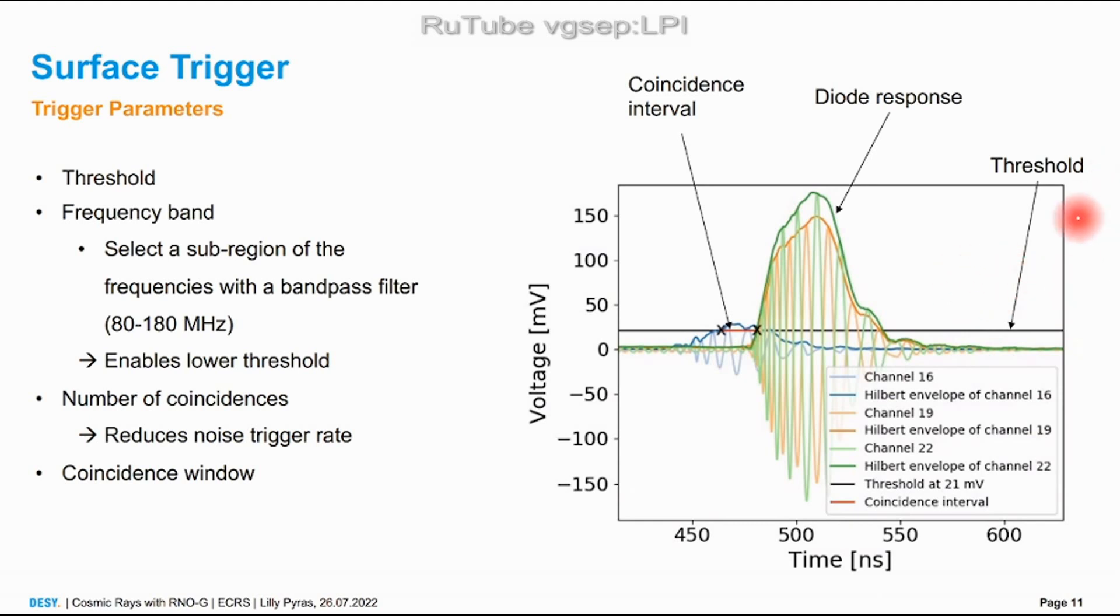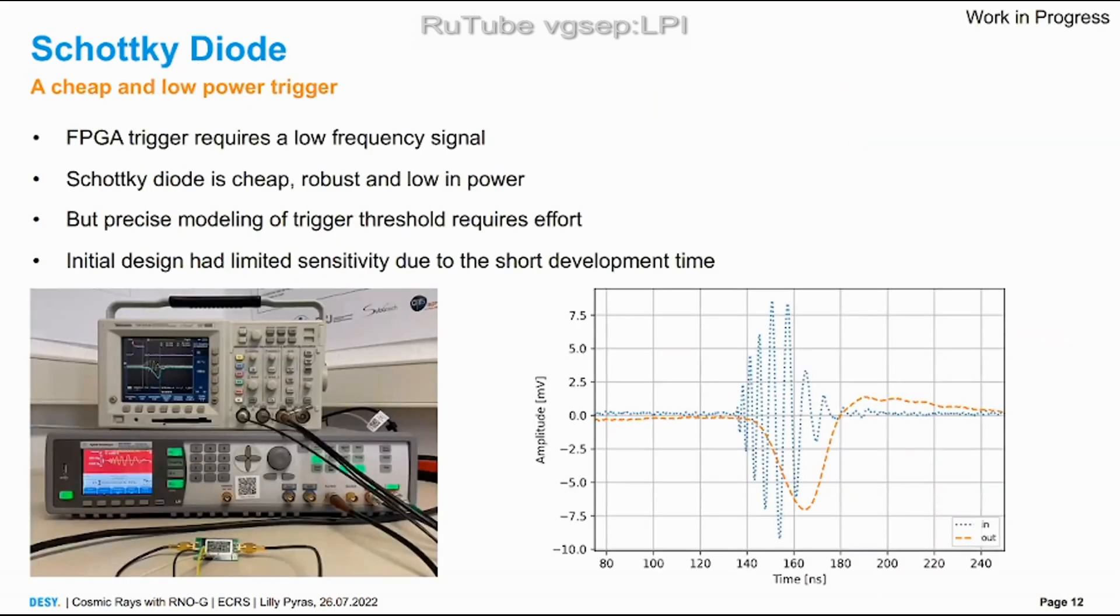The coincidence check also reduces the trigger rate. The problem is this air shower signal is really oscillating fast and that's not good for the FPGA who has to decide if it's triggered or not. So we need a mechanism to smoothen the signal and this is done by a diode, in this case a Schottky diode. The Schottky diodes are great because they're super cheap, they consume no power and their state is robust.